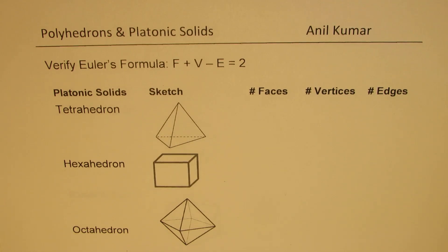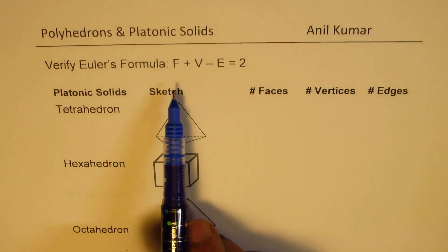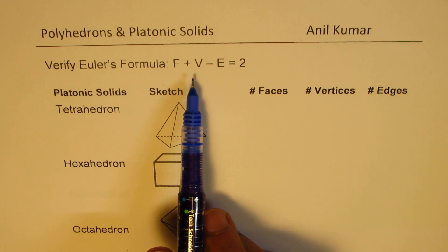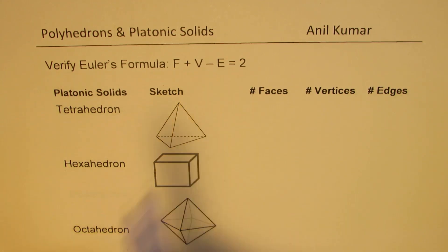I'm Anil Kumar. Welcome to my series on polyhedrons. We'll discuss the platonic solids in this particular video. We'll try to figure out how many faces, vertices, and edges they have, and we'll verify Euler's formula, which is faces plus vertices take away edges should be equal to 2.